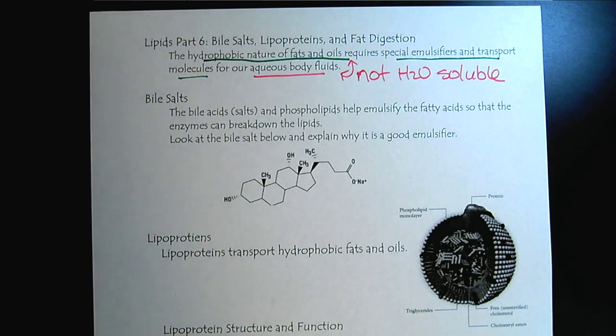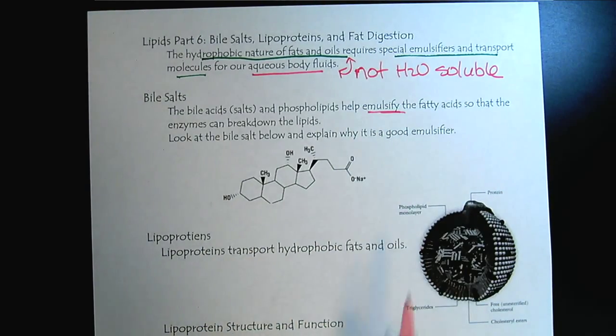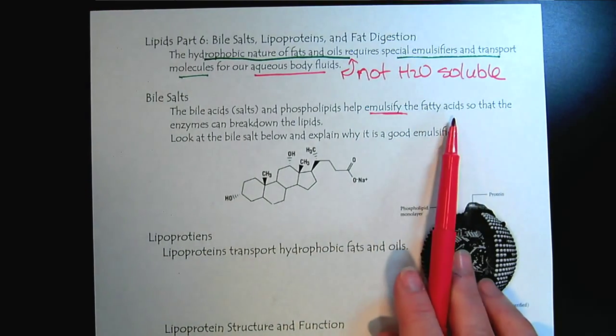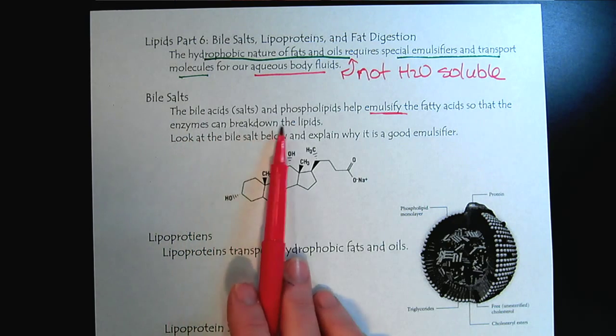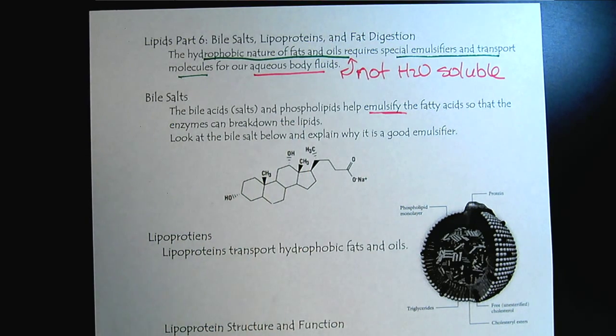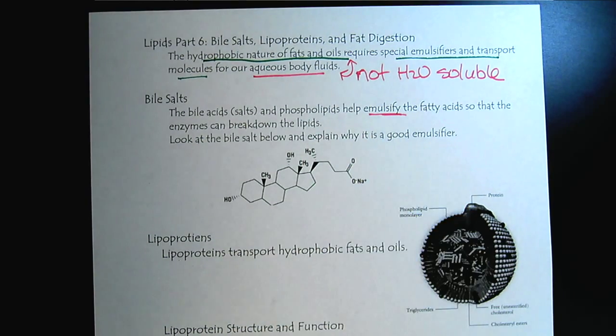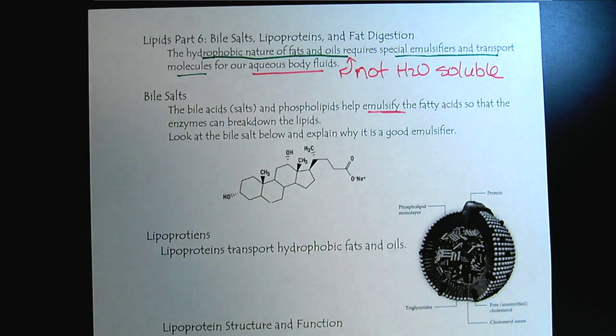So the bile salts are the emulsifiers. They help emulsify the fatty acids so that the enzymes found in the aqueous fluids can get in there and break those lipids down so that we can use them as an energy source. So when you think about a bile salt, you're thinking about an emulsifier. And so now let's look at the bile salt and explain why.